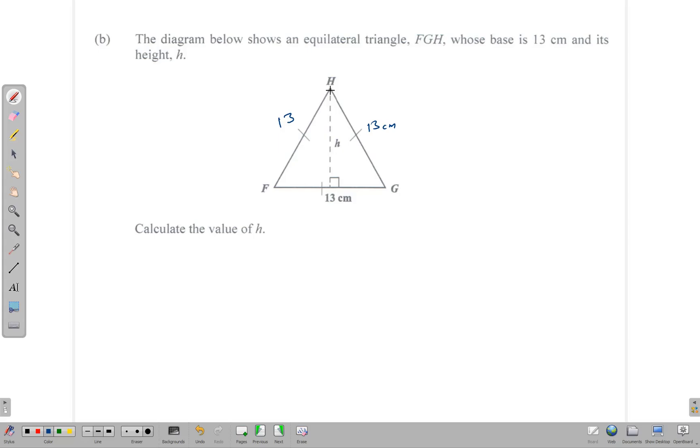We are asked to calculate the value of H. To calculate the value of H, we use the idea that if you draw a perpendicular line from H to FG, for example, that line will bisect this side. So it will cut it in two, and what you end up with is a right angle triangle where this side being cut in two gives you 6.5 centimeters, and of course this side is still 13 centimeters.